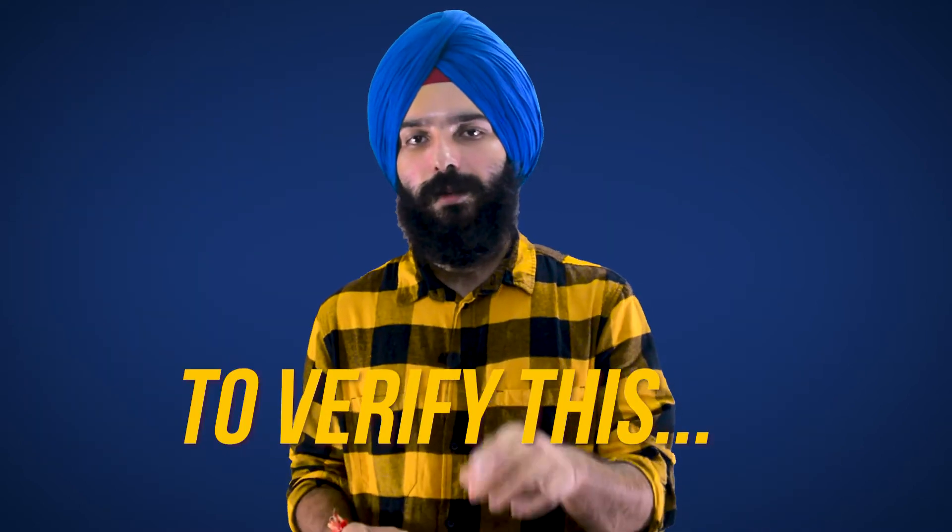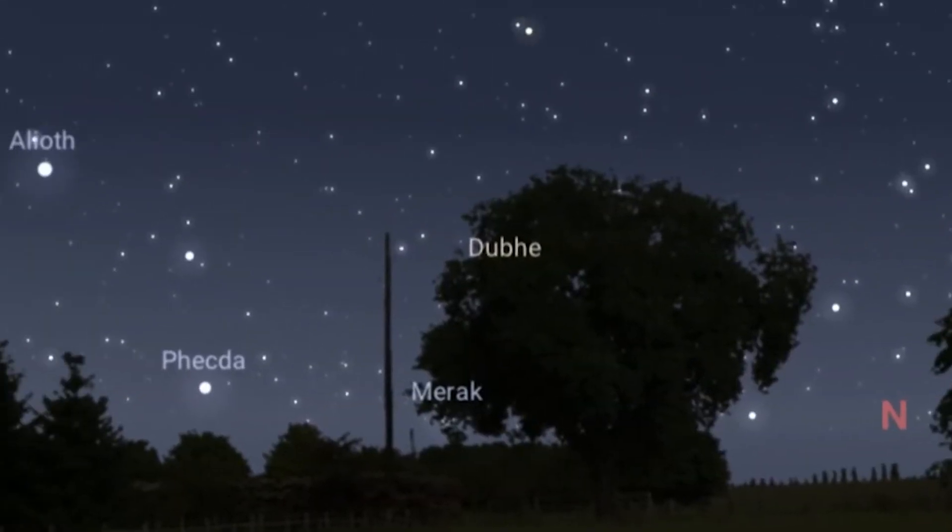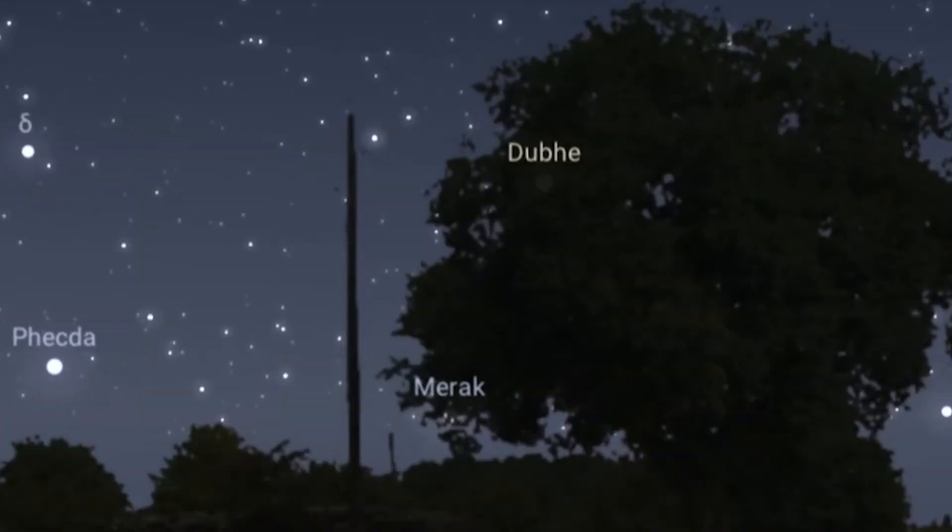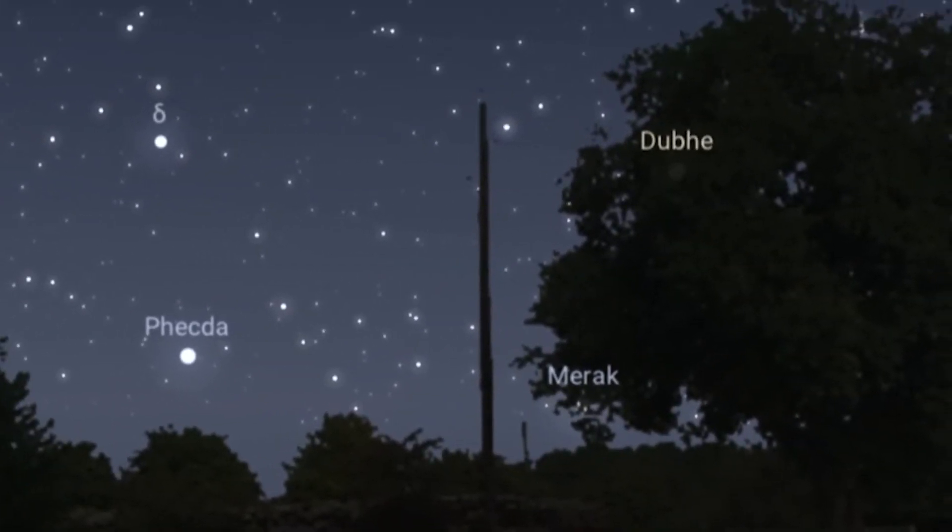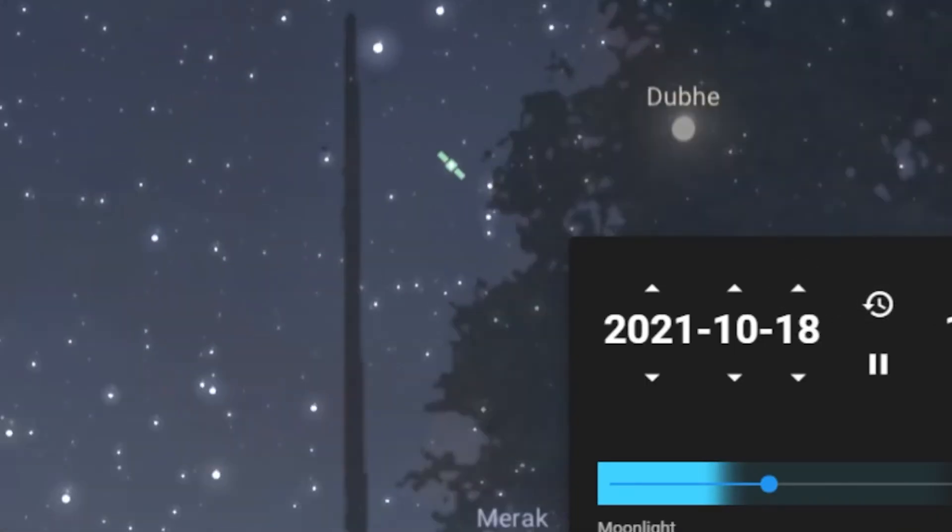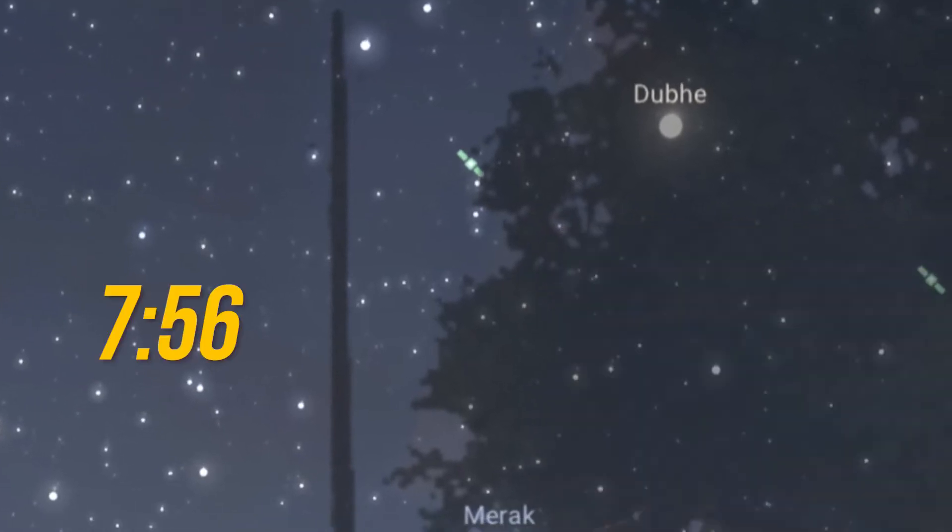To verify this, if you observe the same star with some fixed point of reference each night, what you will find is that the same star next day would arrive a little earlier than what you expect. That if you observe the star today at 8 PM, then the next day the star would be there at 7:56.